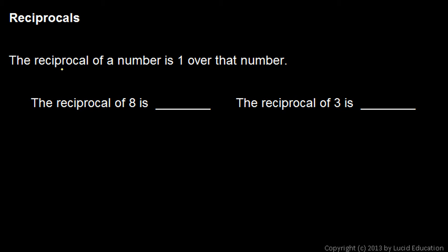The reciprocal of a number is simply 1 over that number, so this is really easy. The reciprocal of 8 is just 1 over 8, and remember that the fraction bar means division, so the reciprocal of 8 is 1 divided by 8, and the reciprocal of 3 is 1 divided by 3.